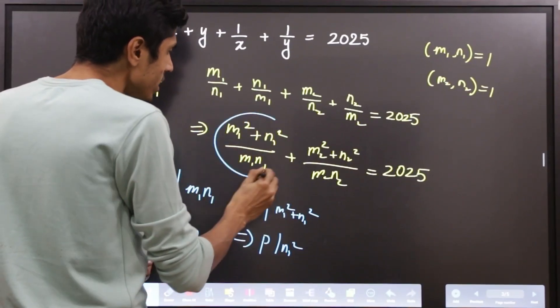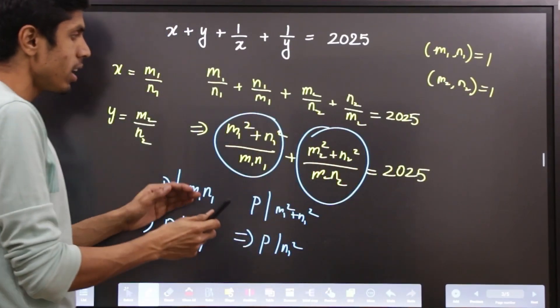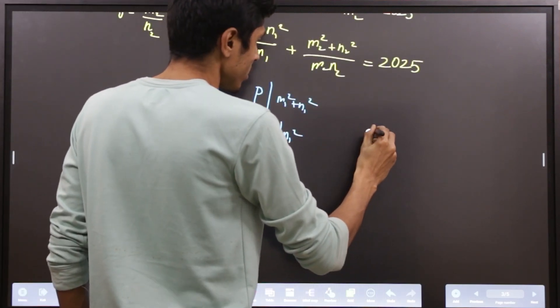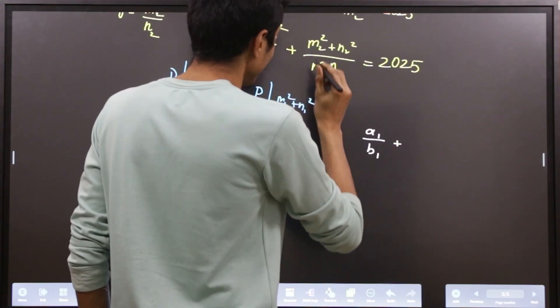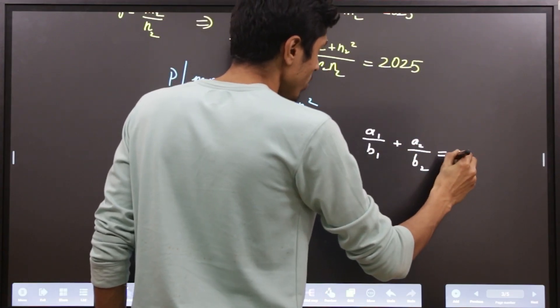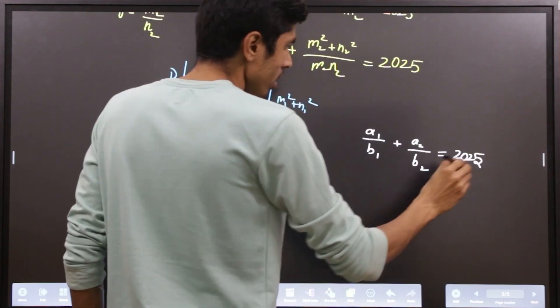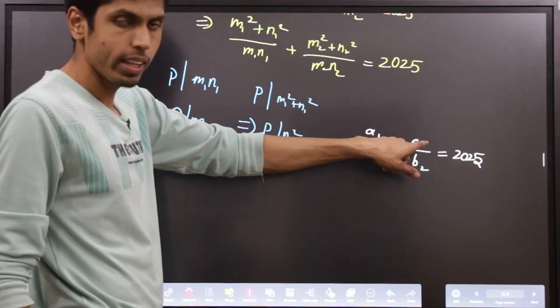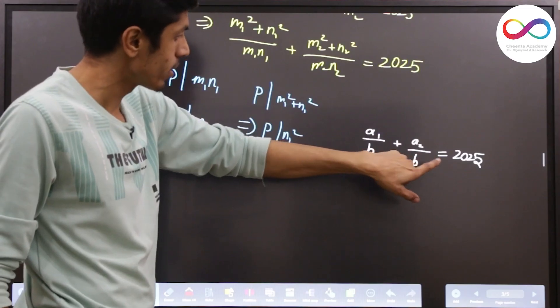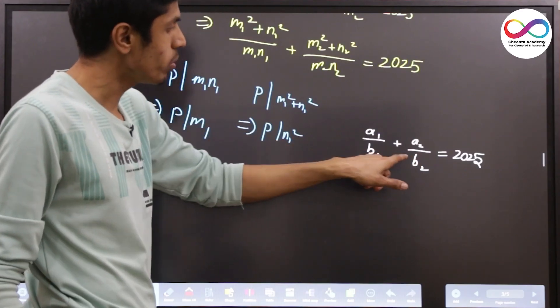Therefore, these fractions by themselves are reduced. Let's suppose the first reduced fraction is a1 by b1 and the second one is a2 by b2. This equals 2025, and since they are already reduced and 2025 is an integer, you must have b1 and b2 to be equal.